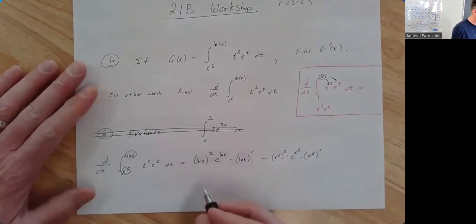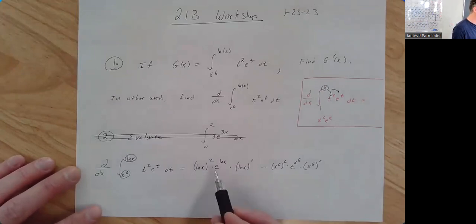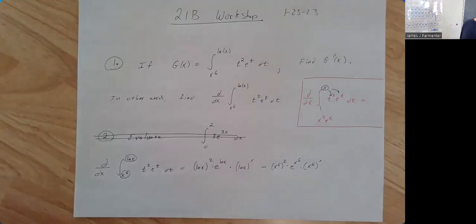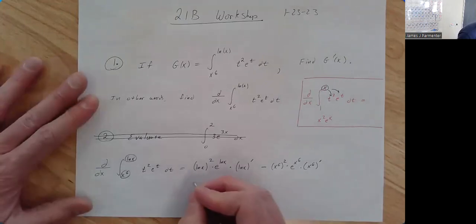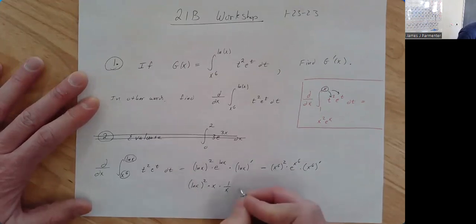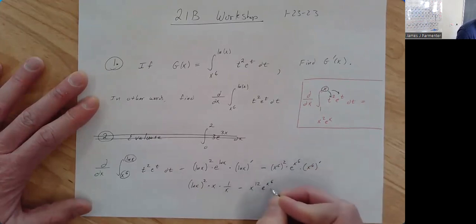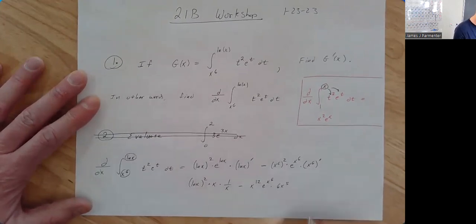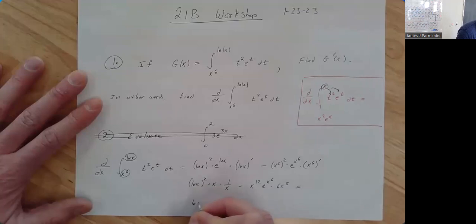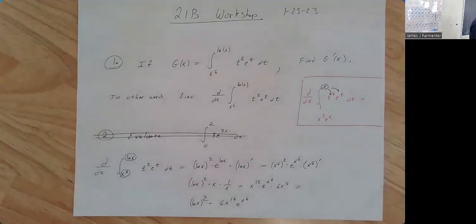Simplifying: e to the ln x is just x, and the derivative of ln x is 1/x — those cancel nicely. Over here, x to the sixth squared is x to the twelfth, e to the x⁶ stays, and the derivative of x⁶ is 6x⁵. So fully simplified we get (ln x)² minus 6x to the 17th times e to the x to the sixth.